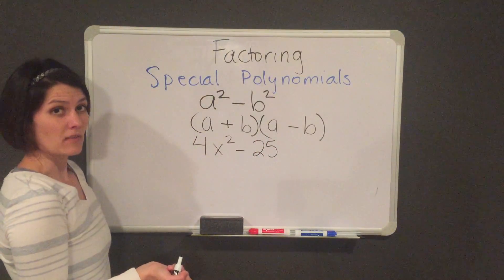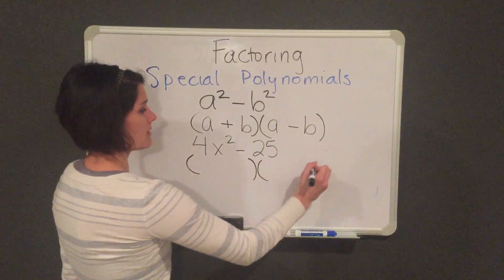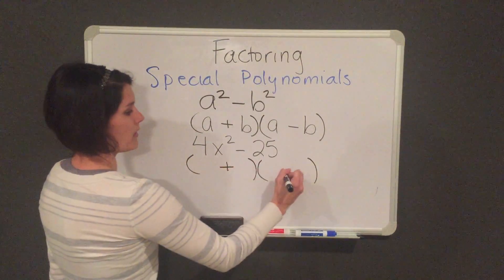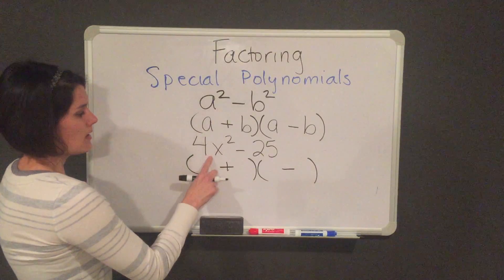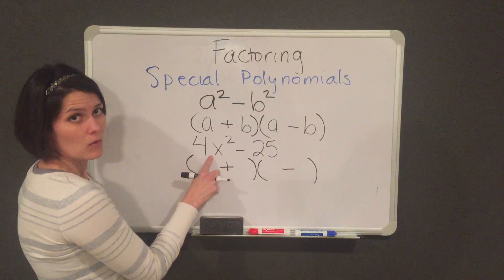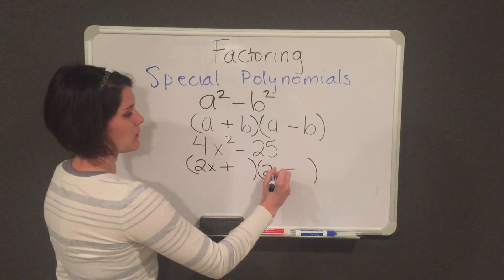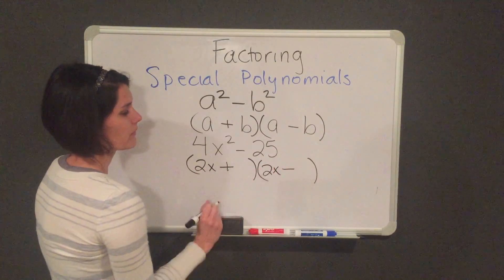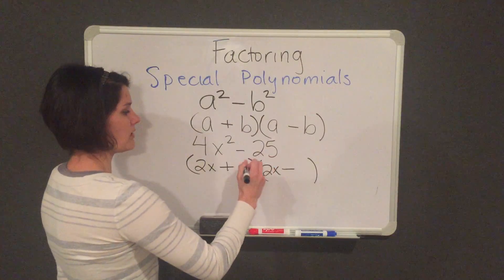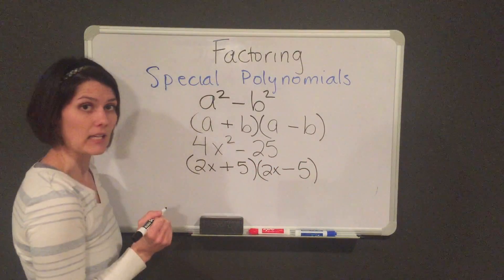This is a difference of two squares, so I will open two parentheses — one is positive and one is negative. I'm going to take the square root of 4x squared, which is 2x, and put that in the first space. Then I'm going to take the square root of 25, which is 5, and put it in the second space.